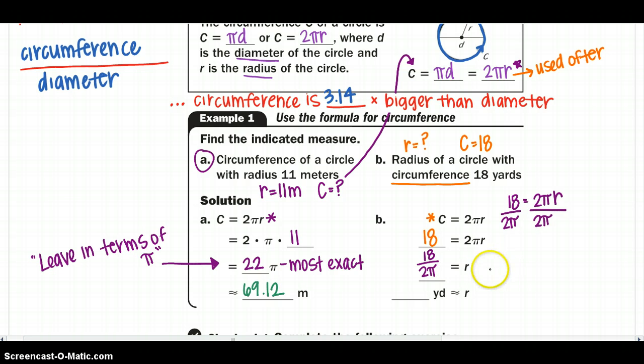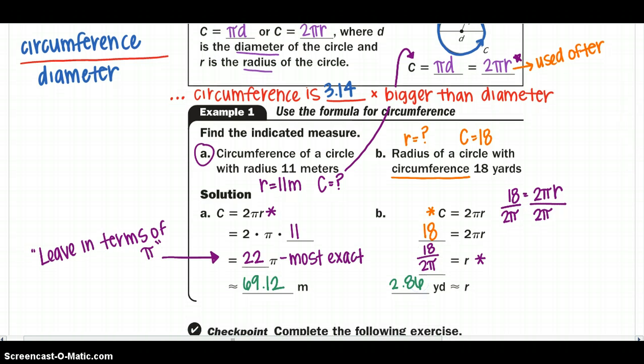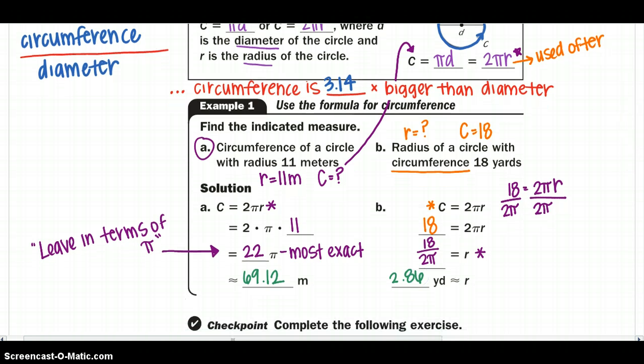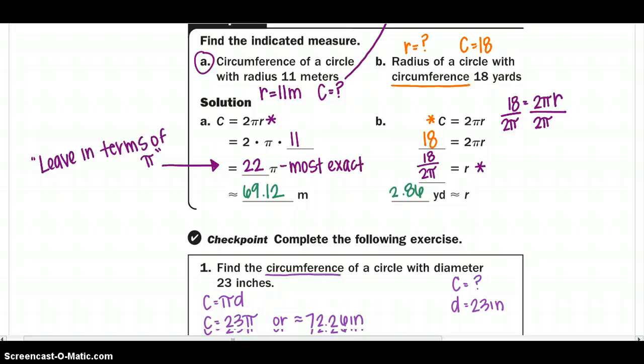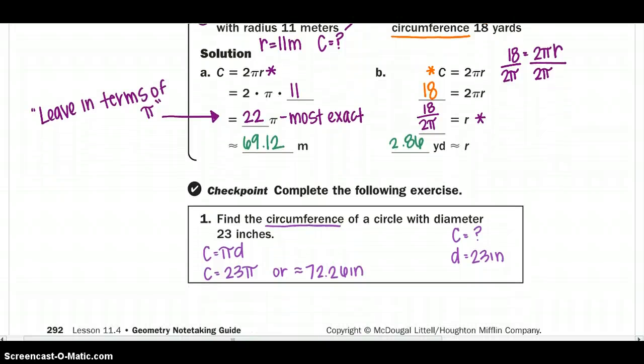That would be in terms of pi. That's the most exact. And then approximately we can say our radius is 2.86. So if you are having any trouble distinguishing which equation you can use, or should use, you can just continue to get through some examples. If you want to stop now and do checkpoint number 1 and then check your answer with mine, that would be a great idea.